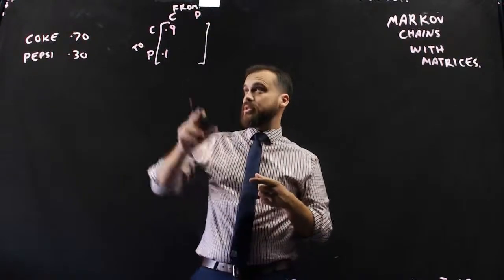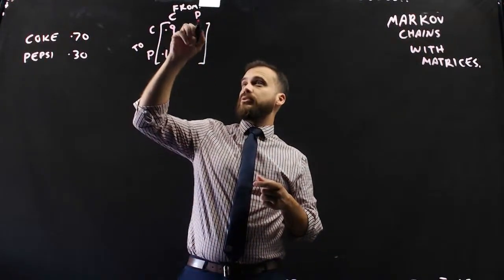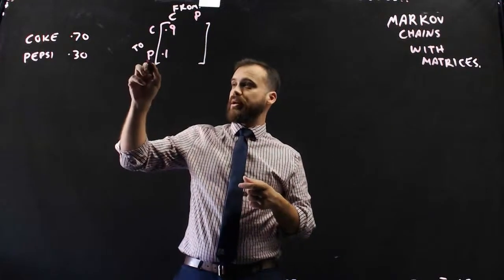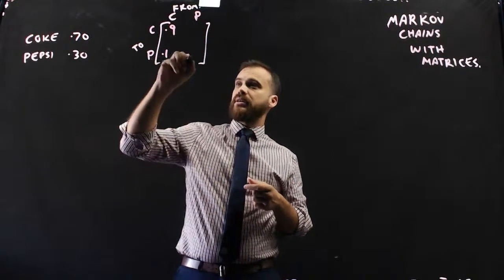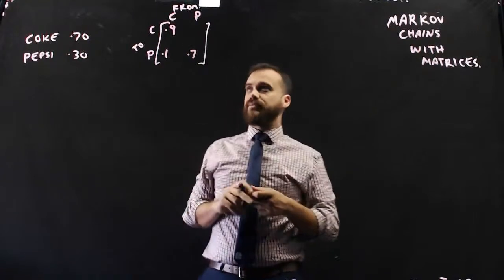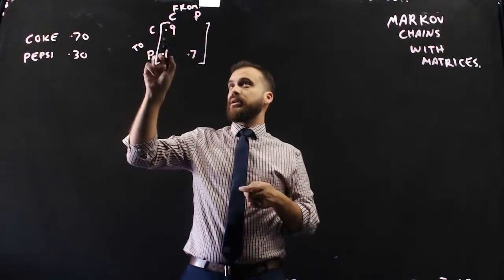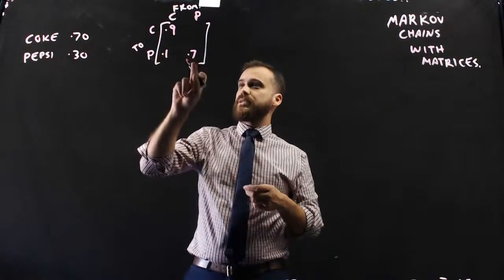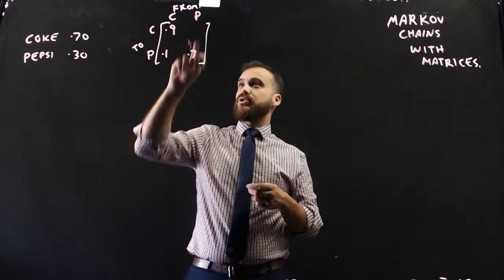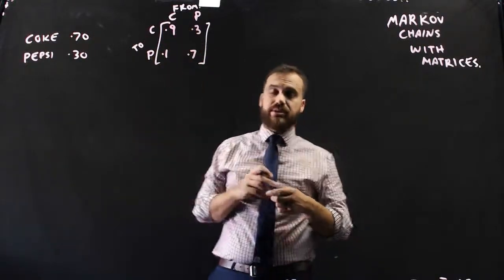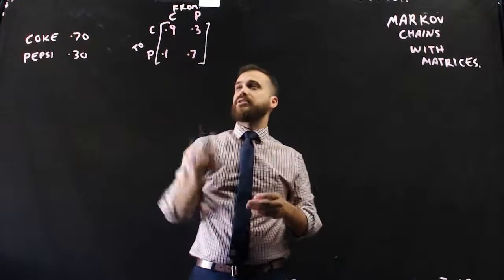We can do Pepsi as well. People who are drinking Pepsi today, next month they're still going to be drinking Pepsi. That might be like 0.7. If we look here, Pepsi to Coke, that means that if 70% of people are staying Pepsi to Pepsi, then 30% of people must be changing from Pepsi to Coke. They must be saying, Pepsi sucks now. I'm going for Coke instead. You can see we've got a 2x2 matrix here. But we can also express this as a matrix.